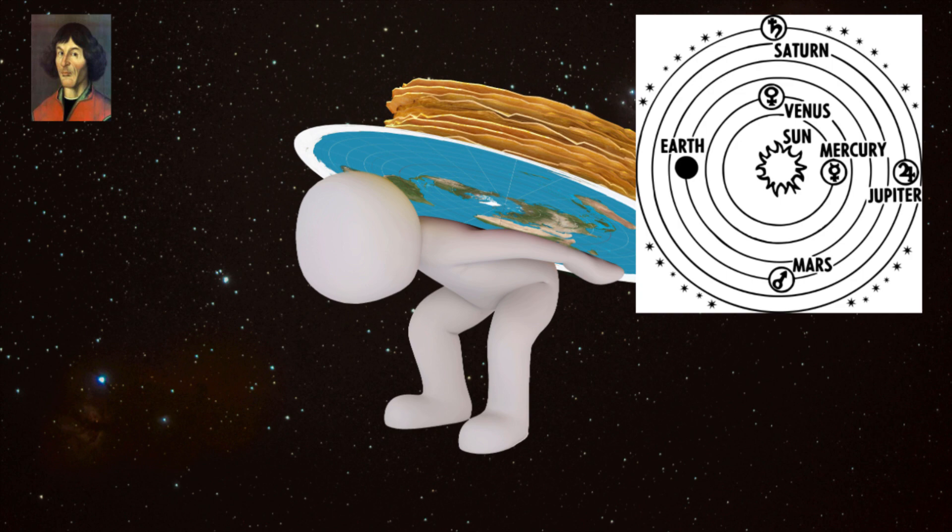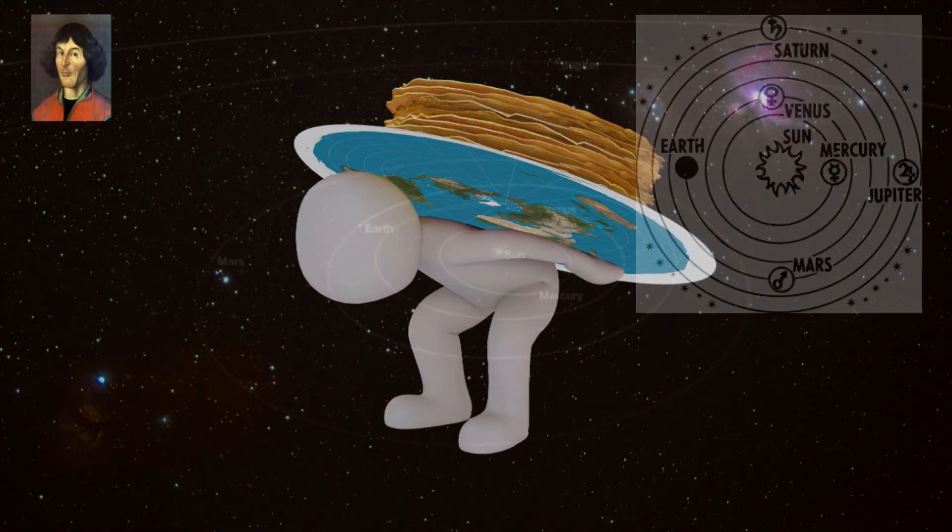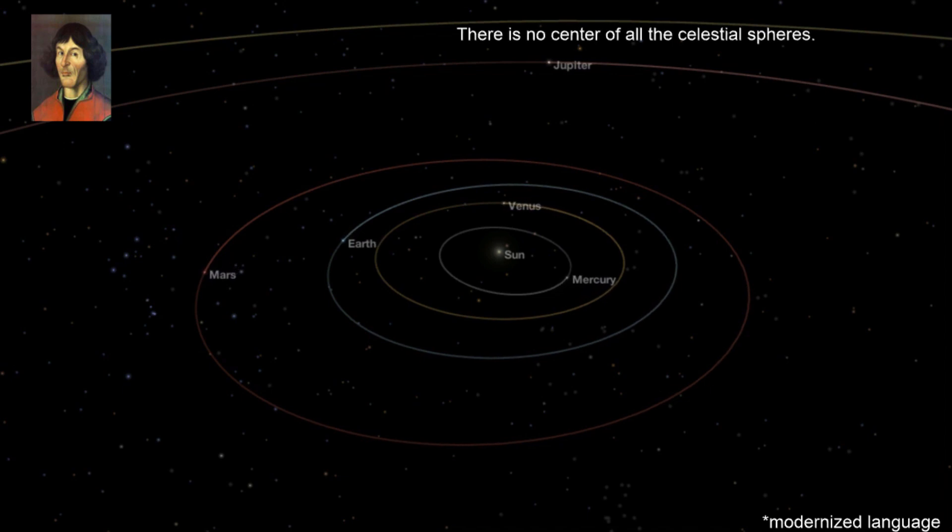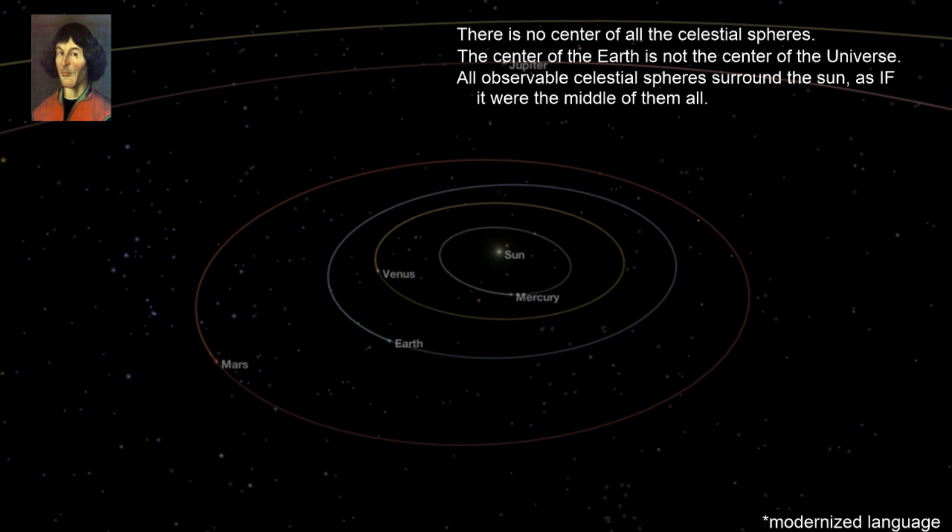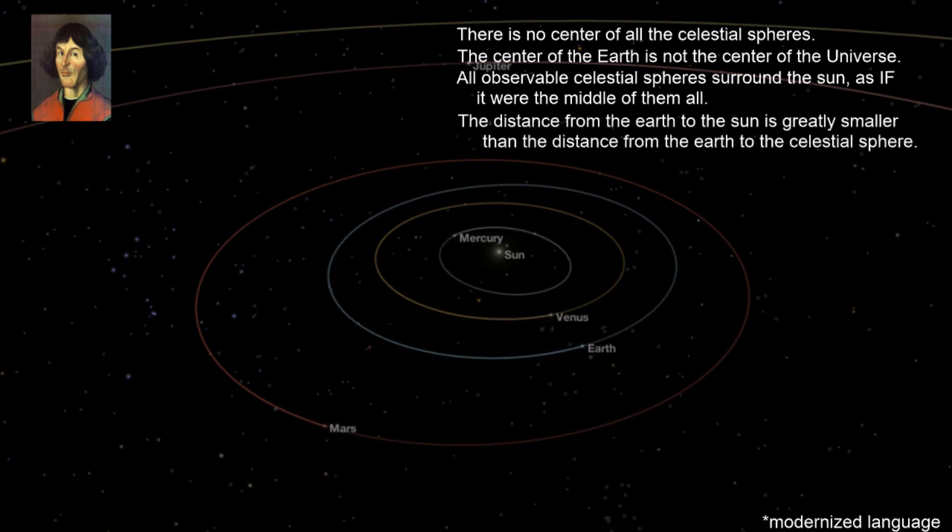With this belief, Copernicus created his seven assumptions that heliocentrism is based. There is no center of all celestial spheres. The center of the Earth is not the center of the universe. All observable celestial spheres surround the Sun as if it were the middle of them all. The distance from Earth to the Sun is greatly smaller than the distance from the Earth to the celestial sphere.